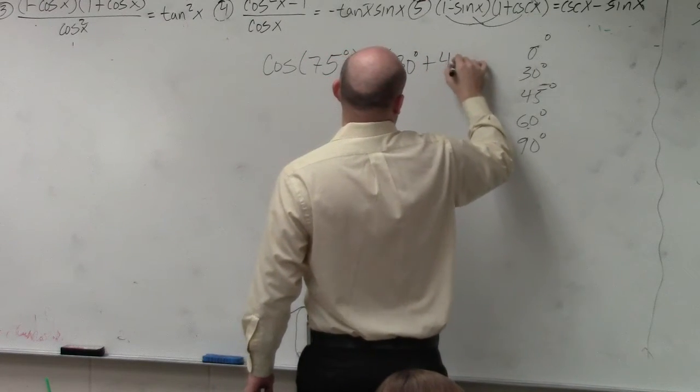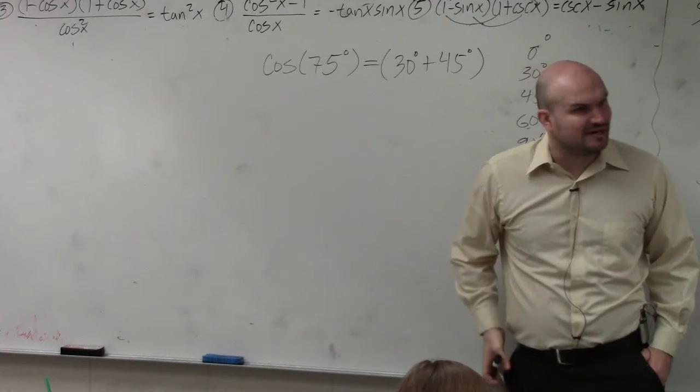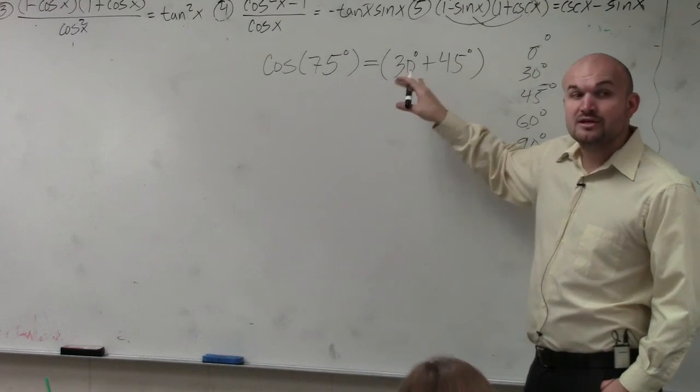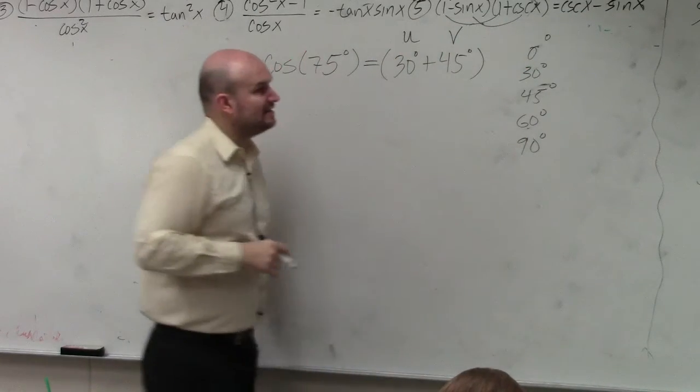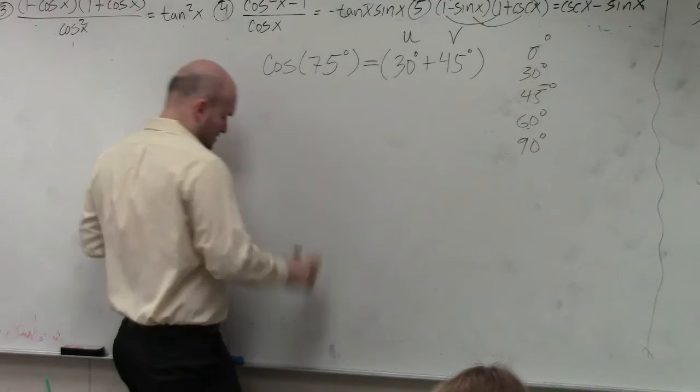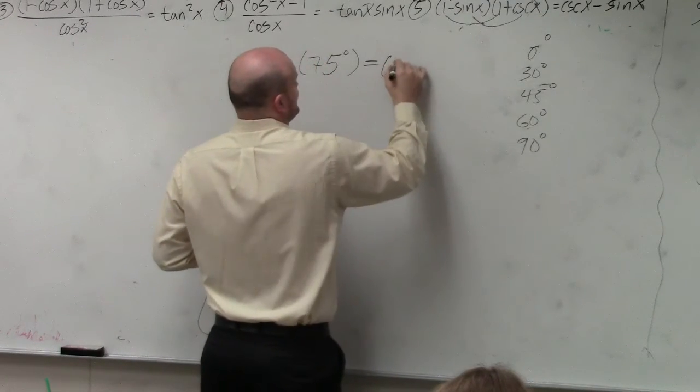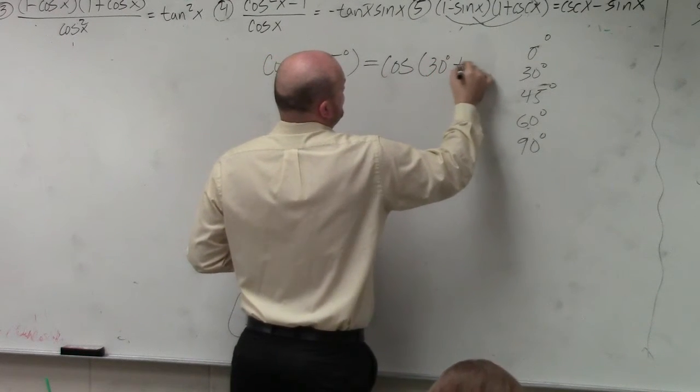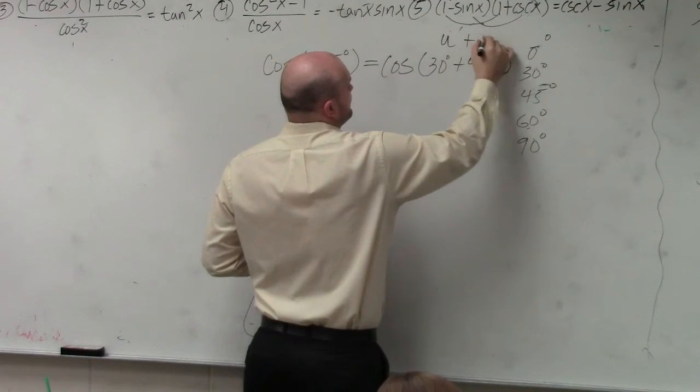So what you're going to do is, a lot of times, they'll be provided for you. So I'm not really concerned about you guys finding what those two angles are, but does that make sense? That's the same thing. So guess what? Once we do that, we label one u and one v. Here, let me actually write this mathematically correct. That's equal to the cosine of 30 degrees plus 45 degrees. Does it matter? Nope. Does not matter.